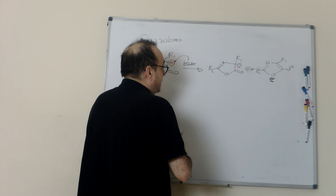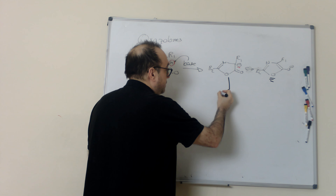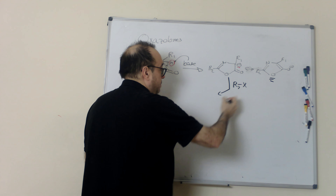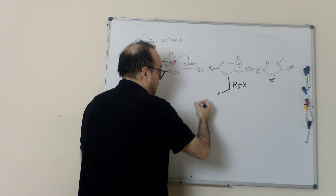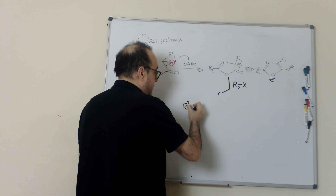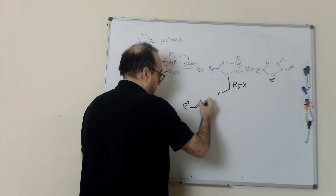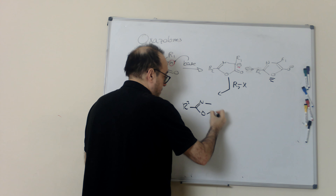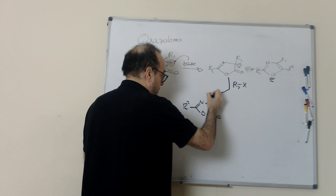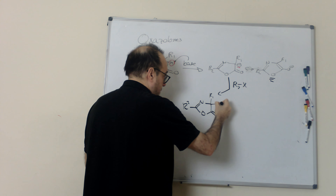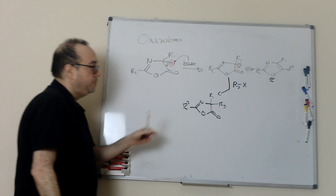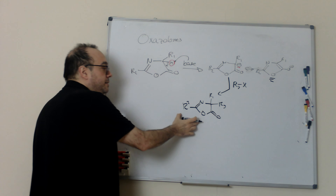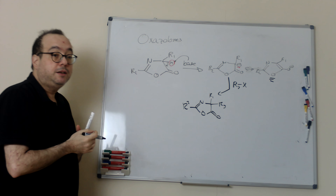Why is this important? Because what we are doing is generating a nucleophile, and we can add an electrophile — for example, an alkyl halide — and this generates the alkylated compound.